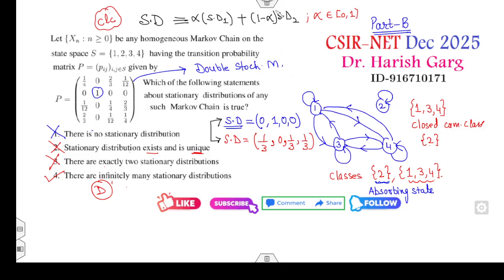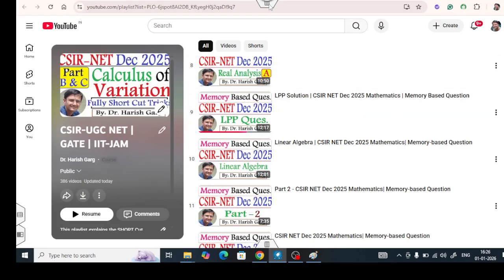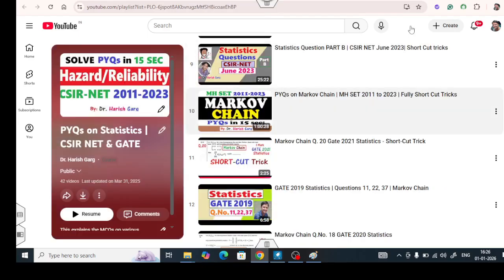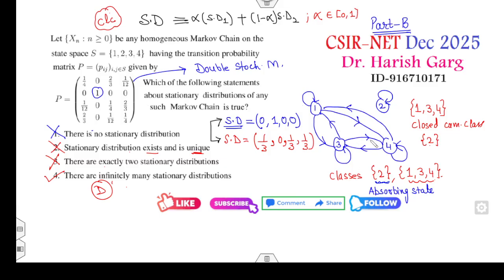If you had watched the earlier stationary distributions lecture, you wouldn't even need to draw the diagram. It clearly says that when the diagonal entry is 1, that is an absorbing state, and the stationary distribution is (0, 1, 0, 0). The remaining submatrix is doubly stochastic with 3 states, giving stationary distribution 1/3, 1/3, 1/3.